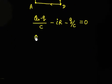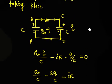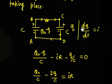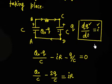Rearranging, I will have (Q0/C) − (2q/C) = IR. And now dq/dt equals I, which is the rate at which charge is flowing. As time progresses, q increases, so dq/dt is positive — I am fine with the sign convention.